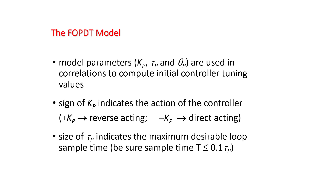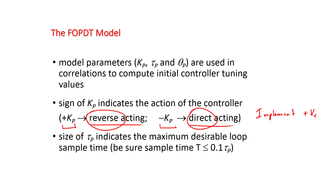We need to obtain k_p, tau_p, and theta_p to get the controller tuning values. Note that if k_p is positive, you have a reverse-acting controller; if k_p is negative, it's direct-acting. Most controller implementations always use a positive k_c, and then you set it to either direct or reverse acting based on the sign of k_p.